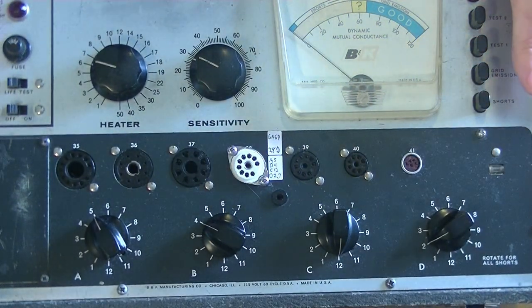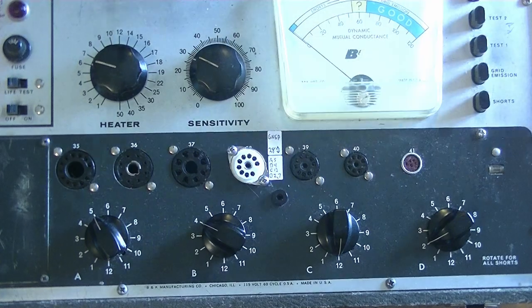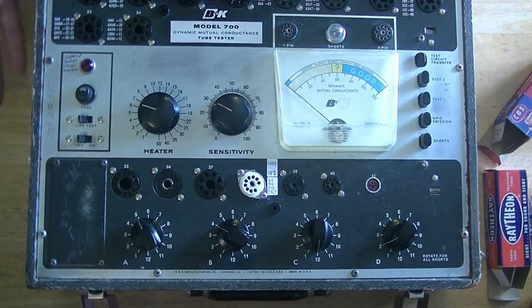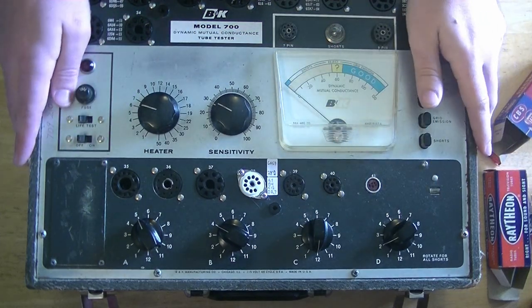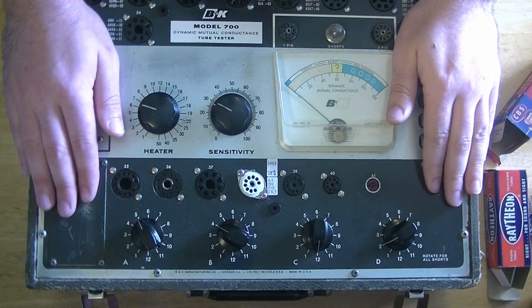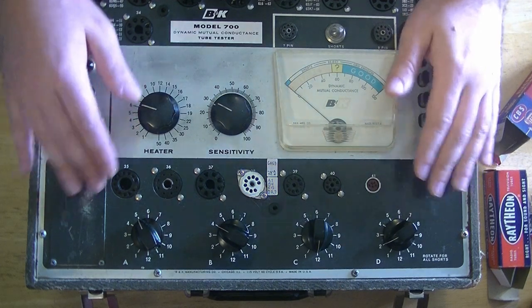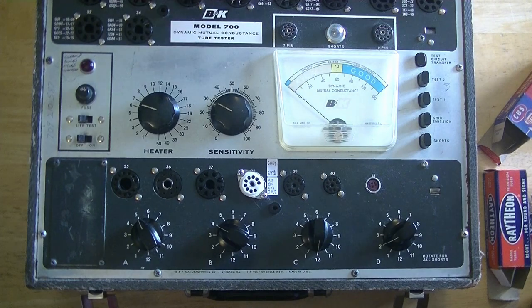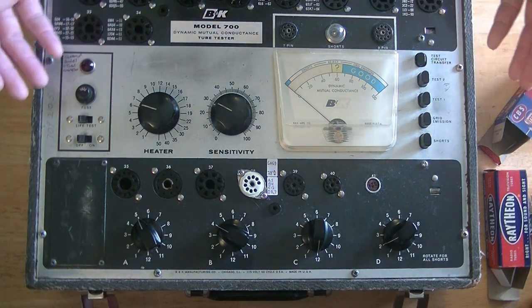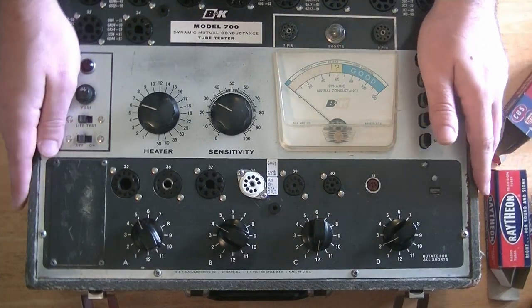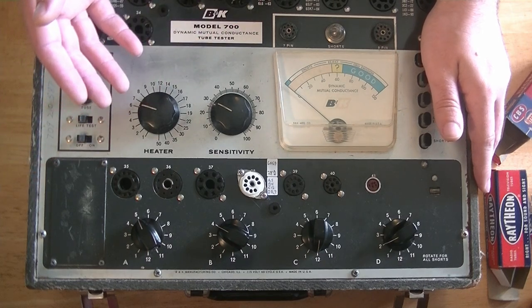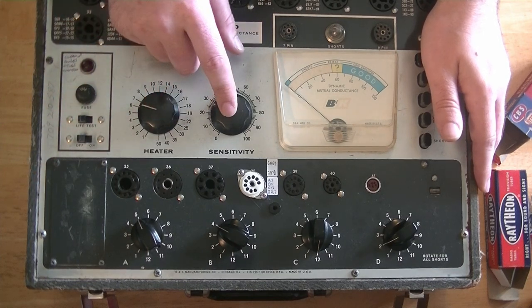This is a B&K 700 tube tester. Here, let me zoom out a little bit. Still can't get it all in frame, but, you know, it's a big tester. The B&K 700 and 707 are great testers. They have a section up here that you can just see the edge of. That's called Jet Test Section. And it allows you to very quickly test large numbers of tubes, because you don't have to set anything on here other than the heater and the sensitivity.